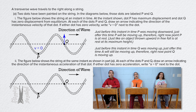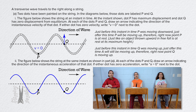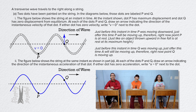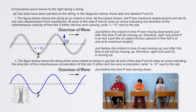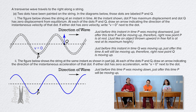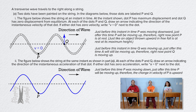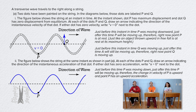Part A double I: The figure below shows the string at the same instant as shown in part AI. At each of the dots P and Q, draw an arrow indicating the direction of the instantaneous acceleration of that dot. If either dot has zero acceleration, write A equals zero next to the dot. The second figure is exactly the same as the first figure.